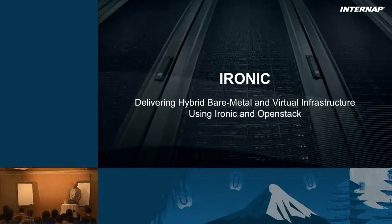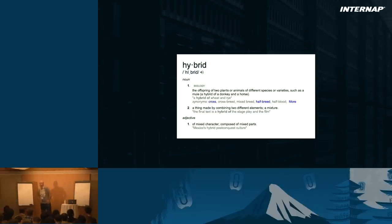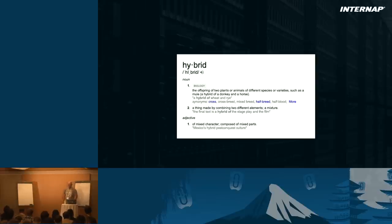This talk is in the hybrid track. Hybrid can mean many things, but for us at Internap, hybrid doesn't mean the usual definition that exists in the OpenStack world. It means mostly a mix between physical and virtual infrastructure. When I say hybrid during this presentation, I'm talking about physical and virtual, not private cloud and public cloud — although with the physical infrastructure, you could deploy a private cloud and interface our public cloud with it.